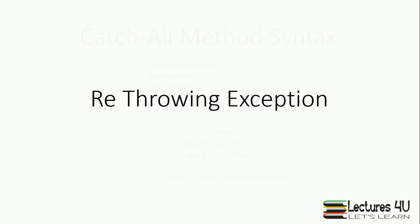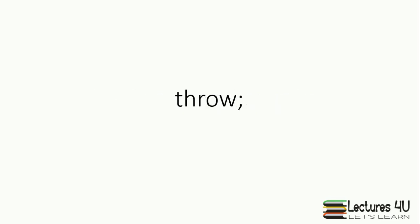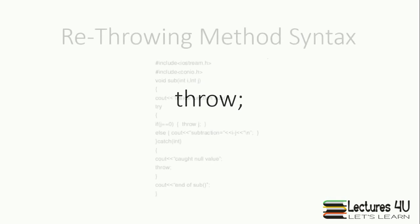In re-throwing exception, a handler may decide to re-throw the exception caught without processing it. In such a situation, we may simply invoke the throw method without any argument. This causes the current exception to be thrown to the next enclosing try-catch sequence and is caught by a catch statement listed after the enclosing try block. Here in the code, we can see that the try method tests for an exception and throws J, which is caught by a catch block, and the catch method re-throws it using the throw keyword.